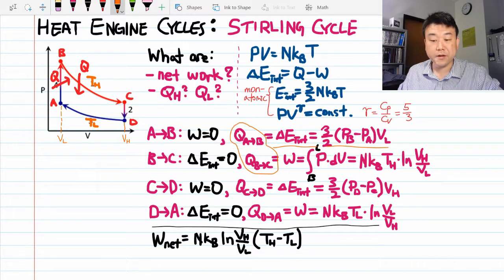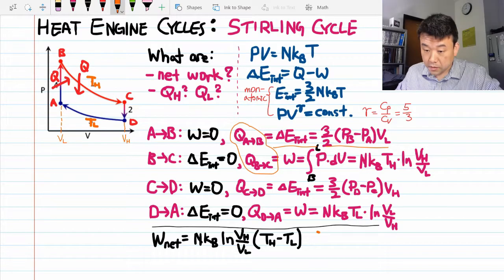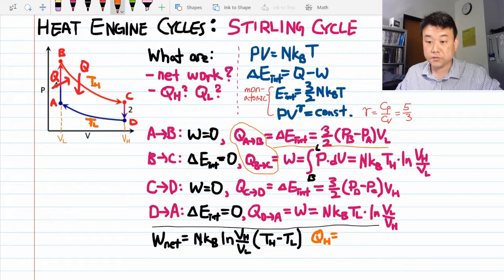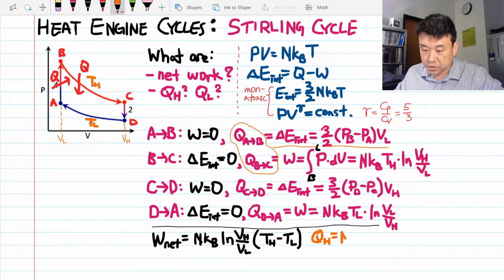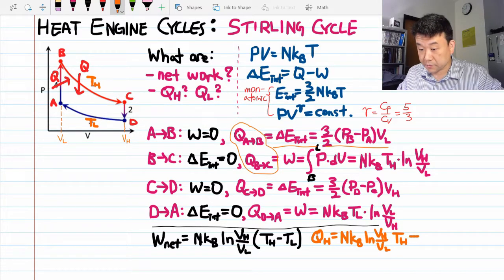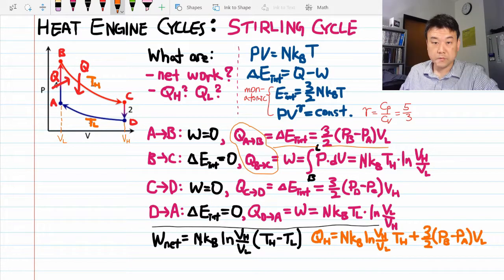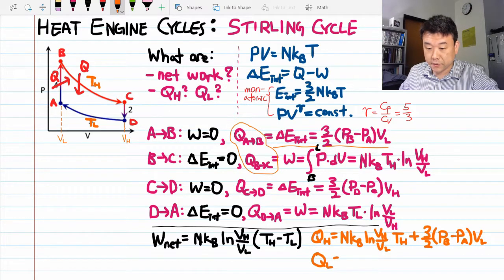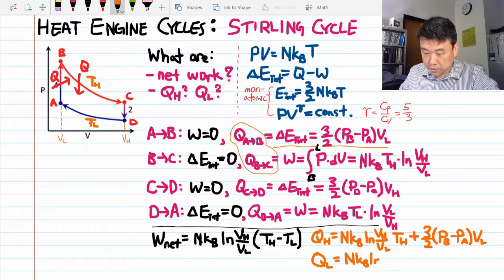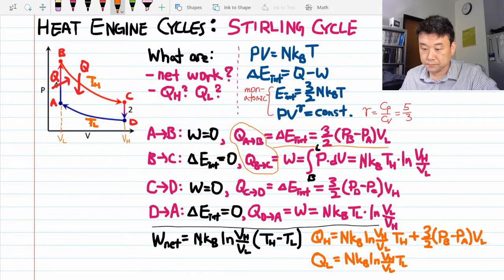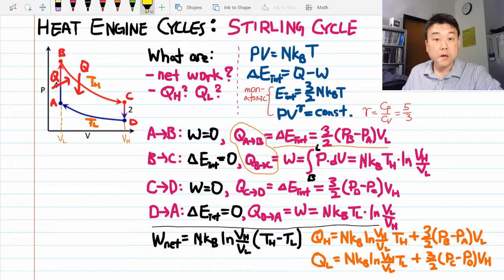So let me write those down. We are going to need them for comparison. The heat input is the sum of the heat transfers from A to B and B to C, which is the same term as the one you see in Carnot cycle and an additional term that comes from our isochoric path. And let me write down the heat output, making sure I'm writing it down as a positive quantity. And once again, it is the same term as the Carnot cycle and an additional term that comes from the isochoric path.